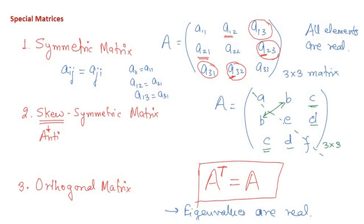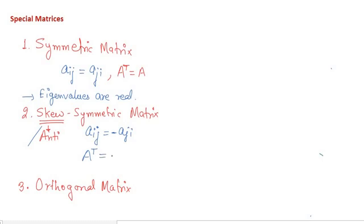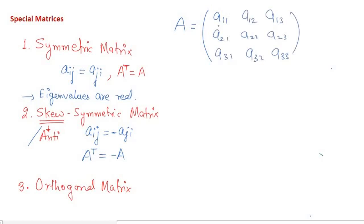Now let's go to the anti-symmetric or skew-symmetric matrix. In a skew-symmetric matrix, the a_ij component equals the negative of the a_ji component. In matrix notation, A^T = −A. For a general 3×3 matrix with elements a11 through a33, the condition requires a12 = −a21.